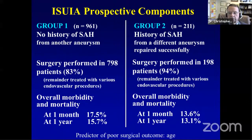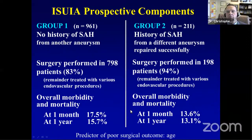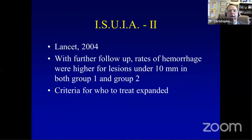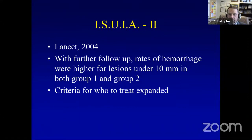The surgical arm of the ISUIA showed that rupture rates were much lower than previously predicted, but prospectively measured treatment-related risks were much higher than previously reported. Using mini mental status exams, overall morbidity and mortality at one month and one year were in double digits. This was quite a surprise. Though one would expect this to reduce the number of treated aneurysms, published in the New England Journal, it actually increased awareness — and treatment rates went up, partly because neuroimaging was discovering more unruptured aneurysms.